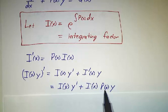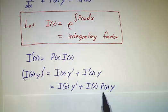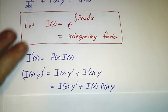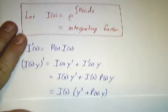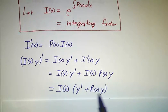We just said derivative of i was i times p, all times y. And so that's i times the left-hand side of our differential equation.